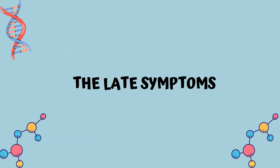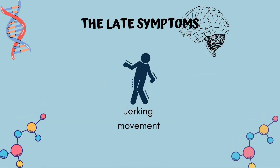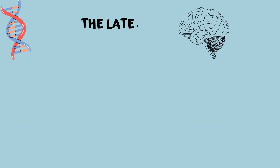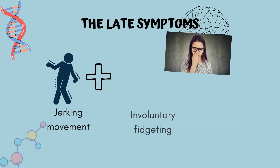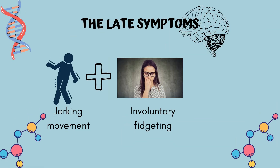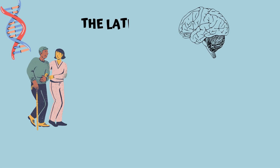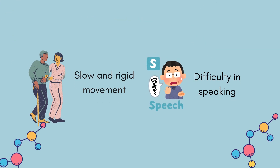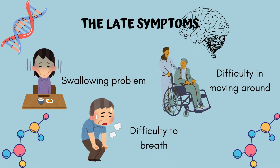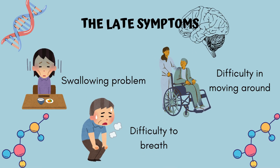Late symptoms include jerking movements and involuntary fidgeting, both known as chorea. Other late symptoms are slow and rigid movement, difficulty in speaking, swallowing problems, difficulty breathing and difficulty moving around.